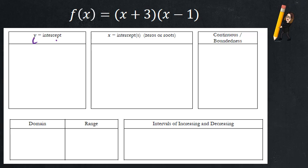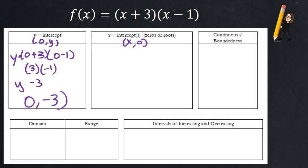Your y intercept. Again, remember, if I want to know my y, I plug zero in for x. If I want to know my x, I plug zero in for y. Let's plug in zero for x. That makes it pretty straightforward. We've got a three, we've got a negative one, we've got a negative three. There's my point: zero, comma, negative three.